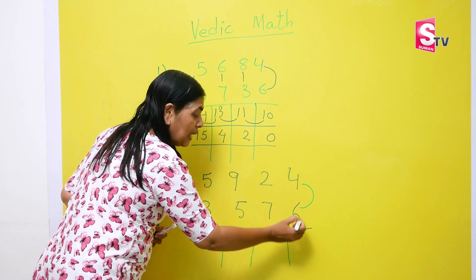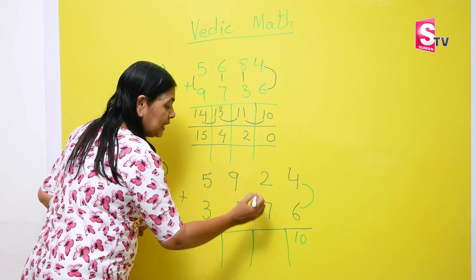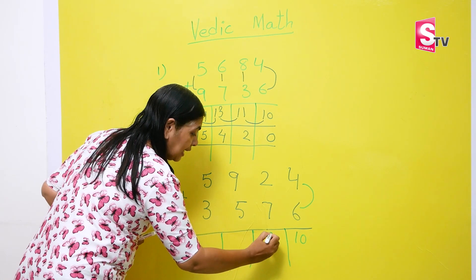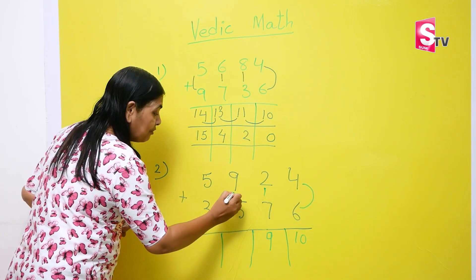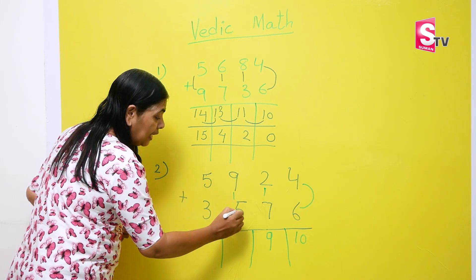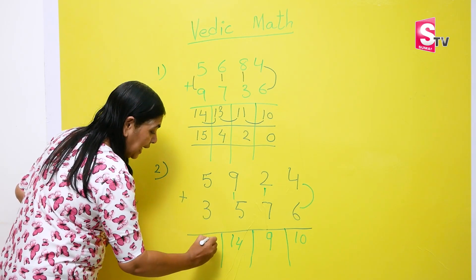Then what we are going to do? We'll add 6 plus 4. 6 plus 4 is 10. 7 plus 2 becomes 9. I'll write 9 as it is. 5 plus 4. 9 and 5 becomes 14. And 5 plus 3 becomes 8.